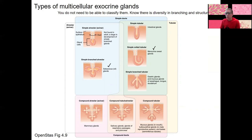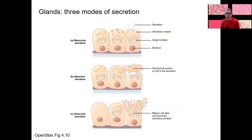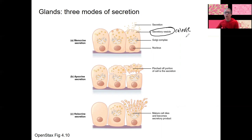I do want you to know about the modes of secretion from these glands. We'll see more examples next week when we look at sweat glands. There are three types of secretion from glands. Merocrine is when there are secretory vesicles and release of the substance — whatever is being secreted, whether sweat, oils, mucus, or enzymes — released via exocytosis, meaning vesicle fusion with the membrane and release.